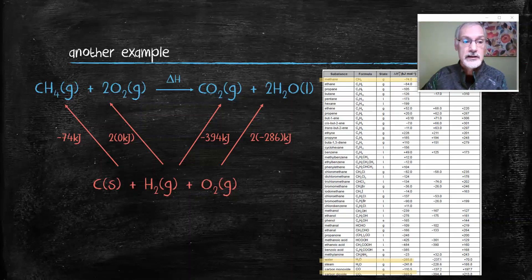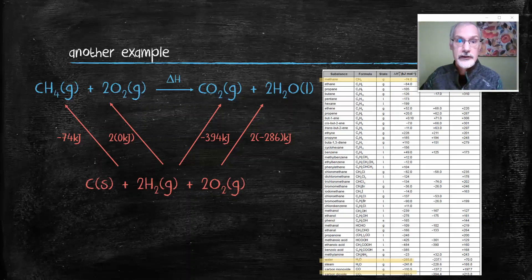Again looking at the reactant side I'm going to need one carbon. I'm going to need two hydrogen gases and two oxygen gases. And so I'm balanced. And you can also check this with the products.